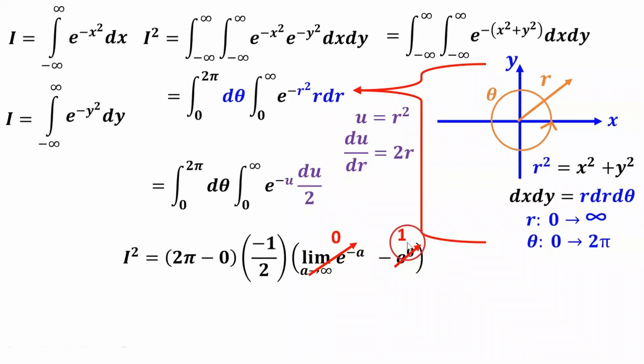And this term goes to zero as a goes to infinity, and e to the zero is one. So if we simplify all of this stuff, we get I squared equals π. This two cancels, and this negative from the negative one cancels with this negative right here. So we're left with π.